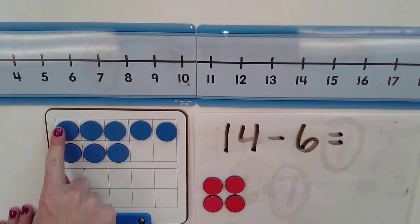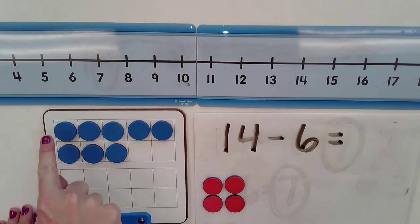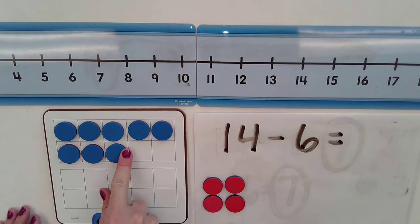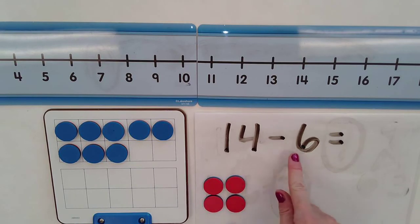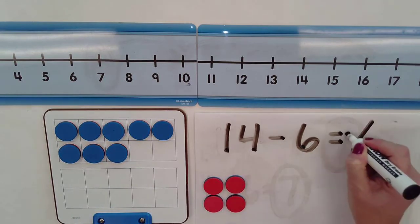And I know it's 8 because I have 1 row filled up here, which is 5, 6, 7, 8. So 14 minus 6 gives me 8.